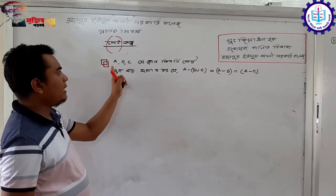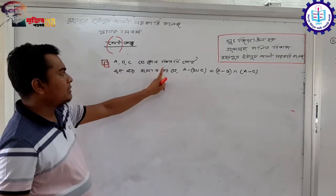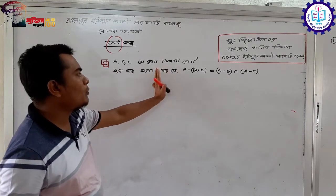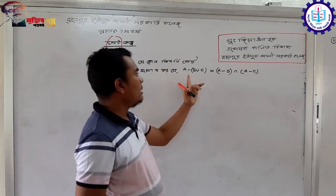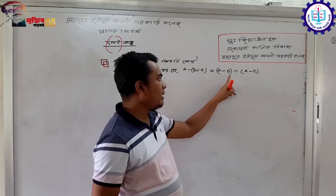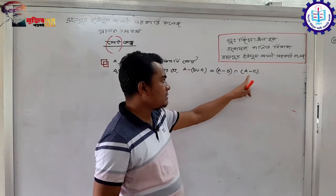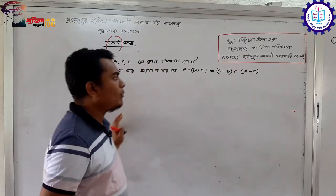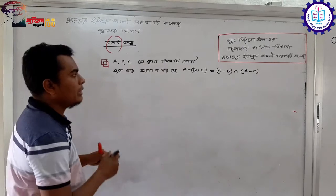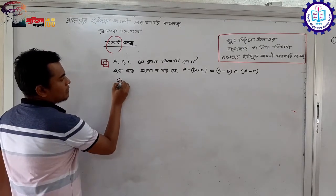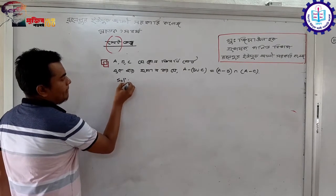There is A, B, C, and A. A̅(B∪C) = A̅B ∩ A̅C. Let us now solve this problem. So, let us begin the solution.